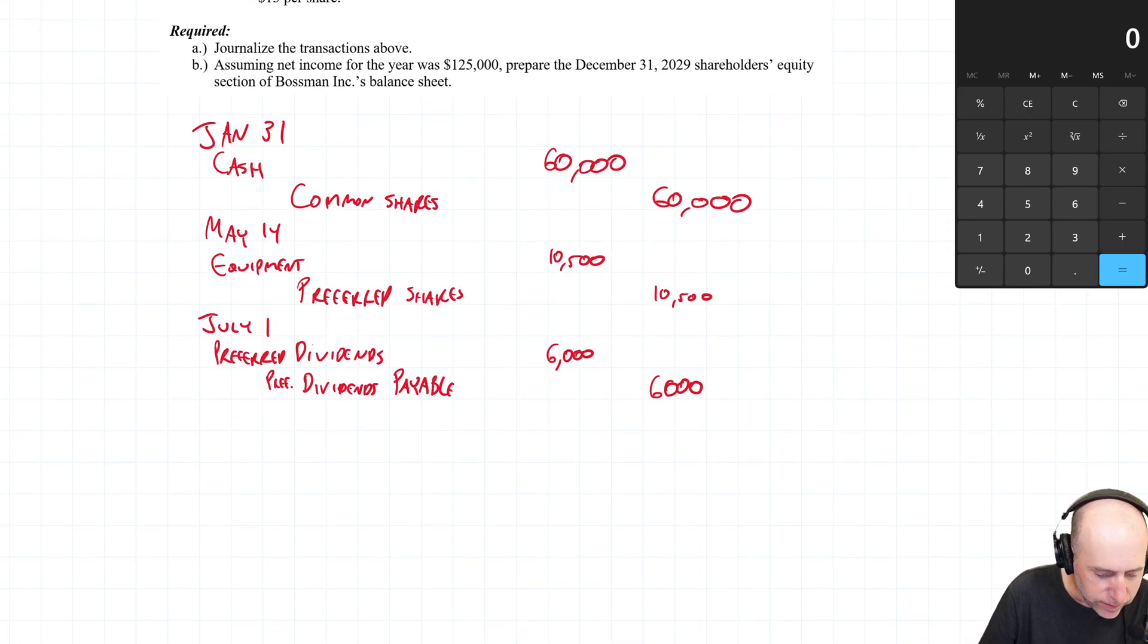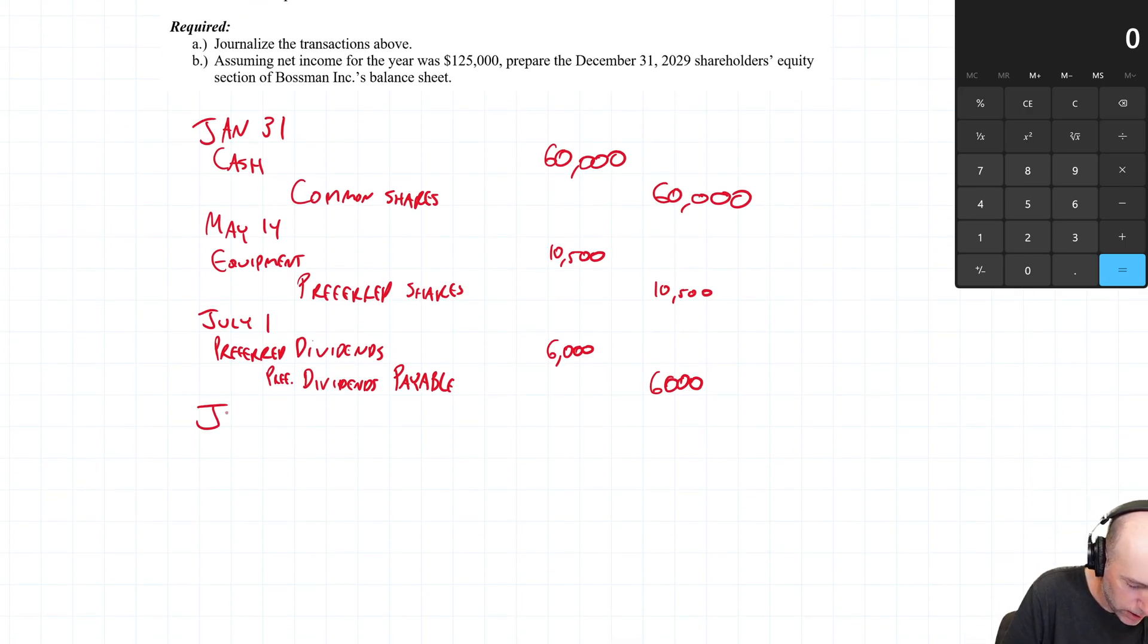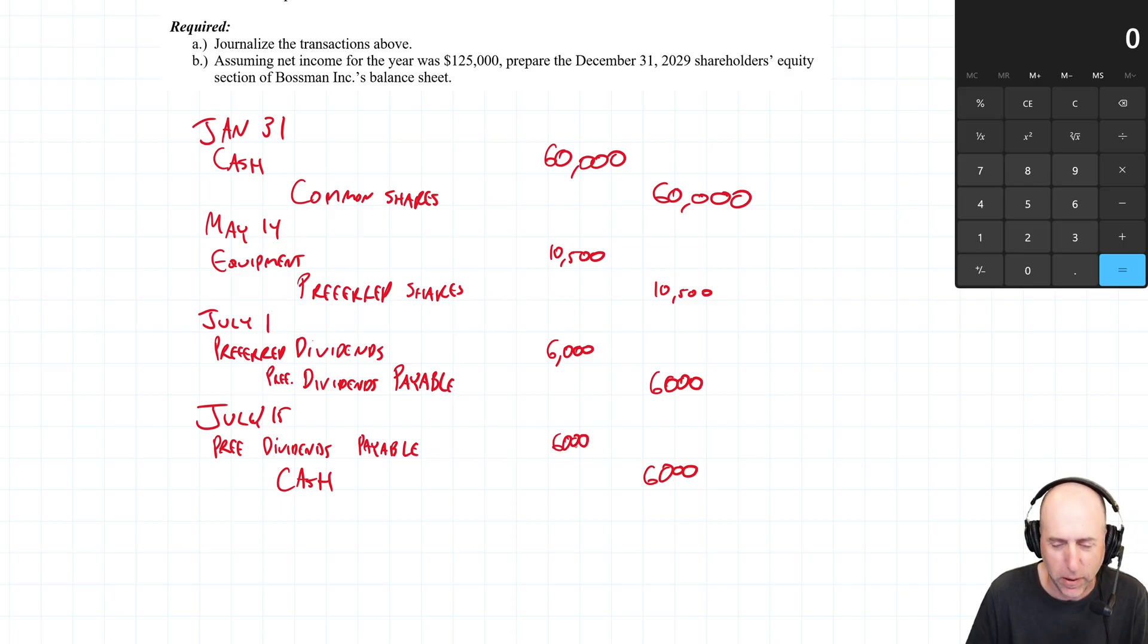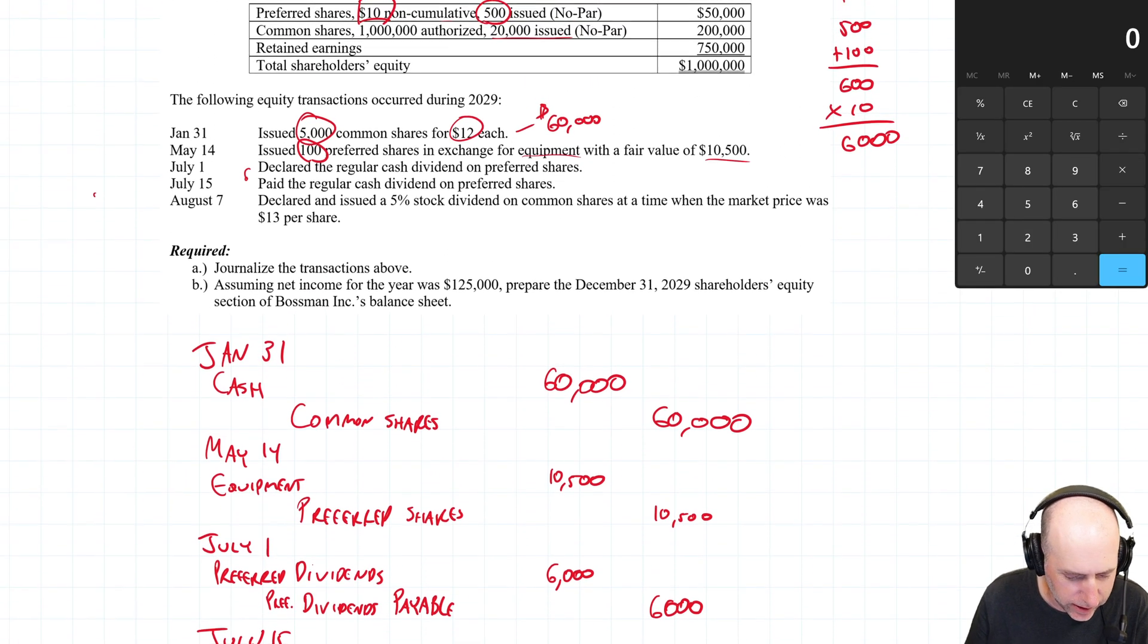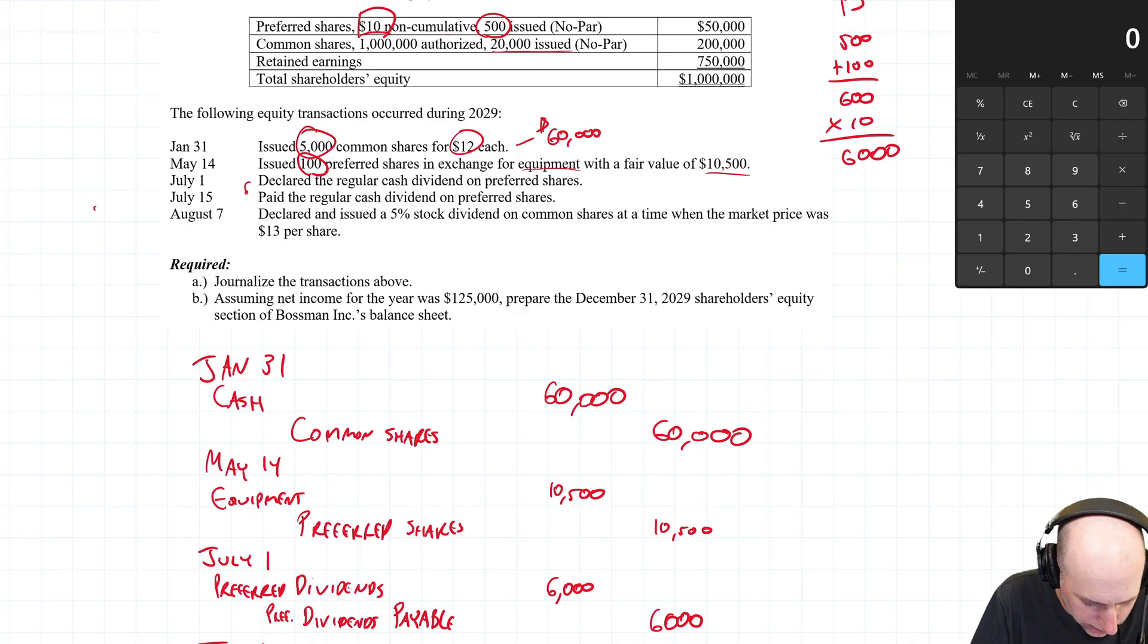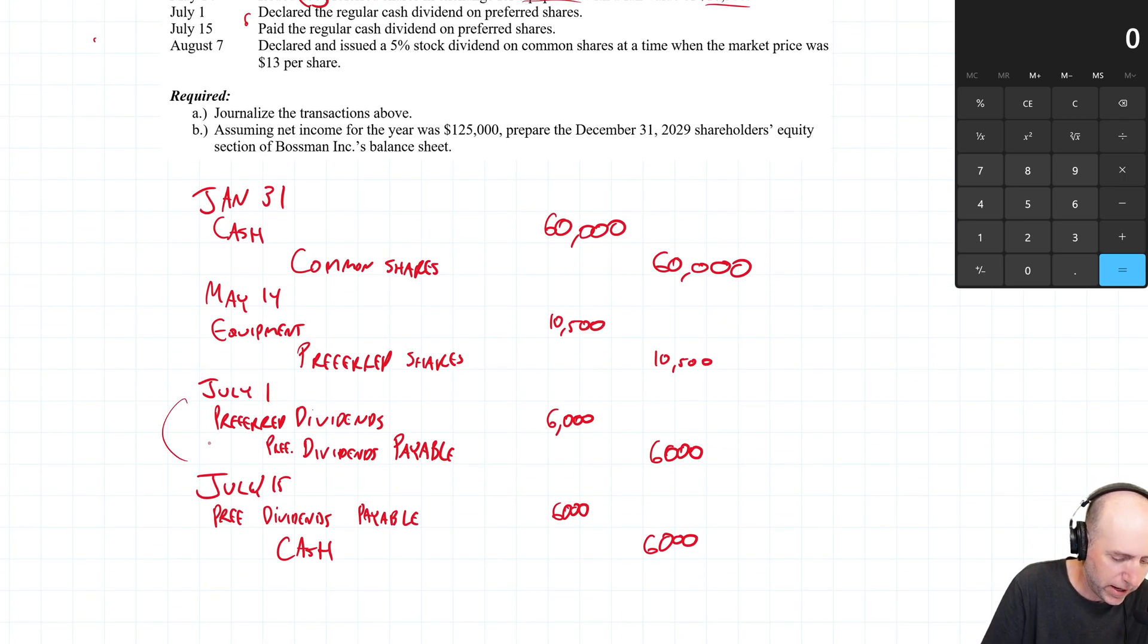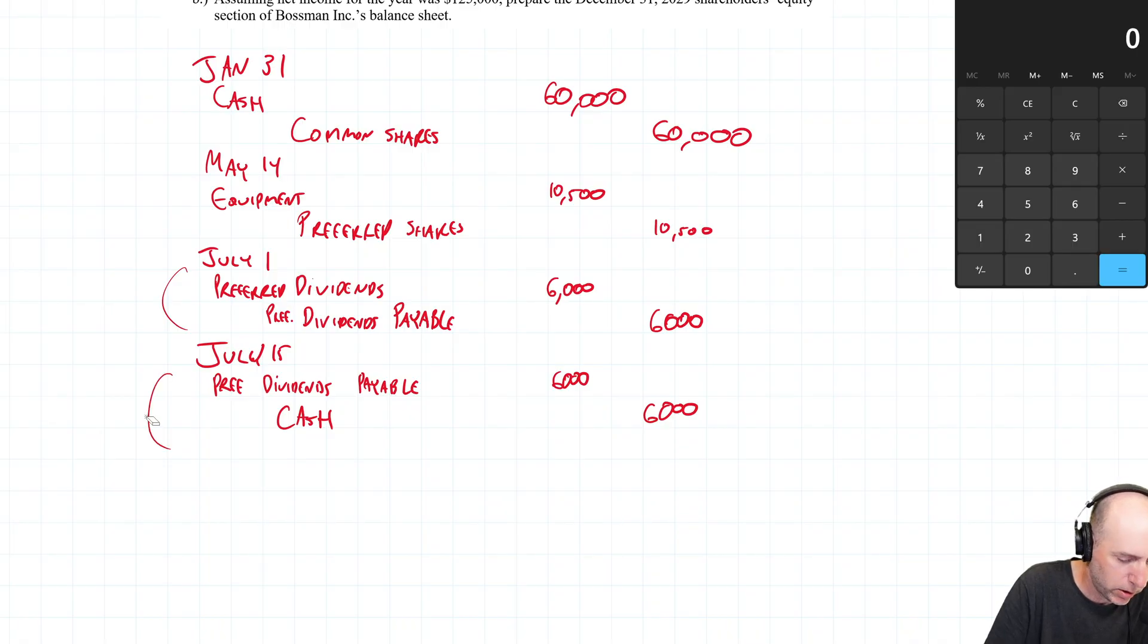Then, on July the 15th, we pay. So, July 15th, credit cash, $6,000. And the debit is to preferred dividends payable. Always with these problems, you can download them from my website, linked below. Paid the regular cash dividend on the preferred share. So, declared the regular dividend. That's July 1st, where we create a payable. And then, bang. That's pretty straightforward, I think.